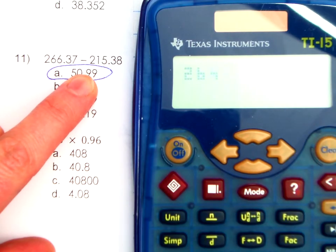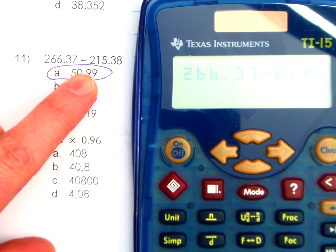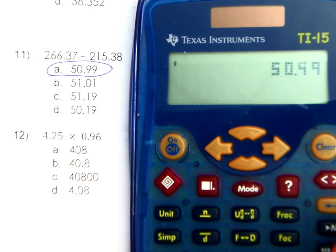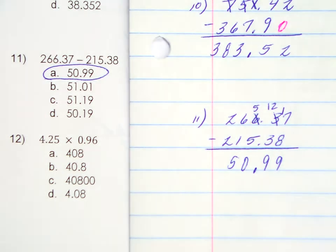Let's see if we punch that in the calculator for completely accurate. 266.37 take away 215.38. Yes.